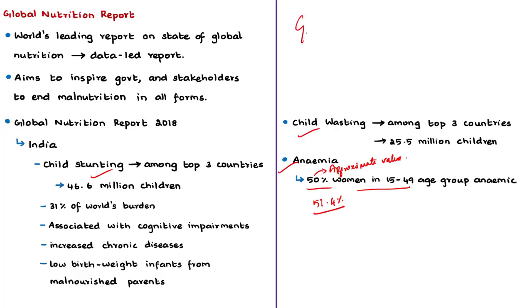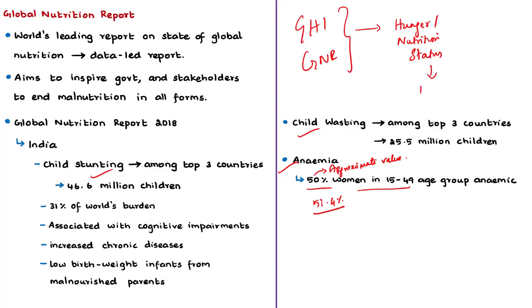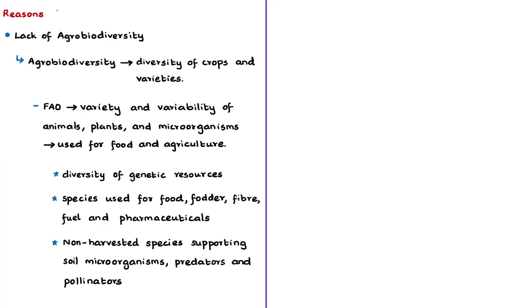From both the Global Hunger Index and the Global Nutrition Report, we have a clear picture of India's nutrition status, and from both reports we can tell that India is not doing so well. Hence, the authors provide the first reason why nutrition levels are low in India — the lack of agrobiodiversity.